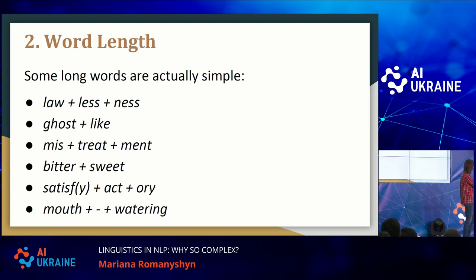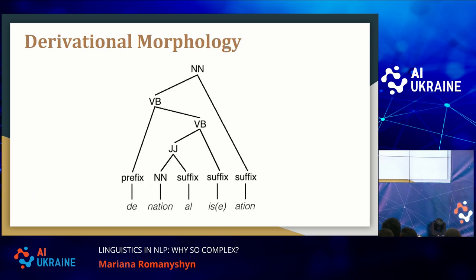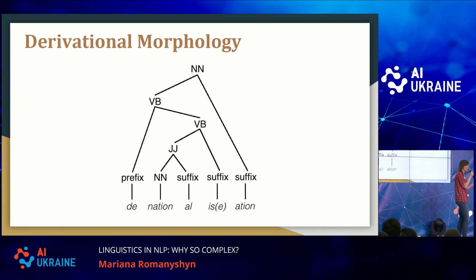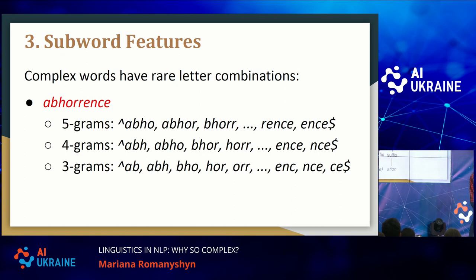This transparent process is called derivational morphology — it explains how words grow different morphemes on the left and right and form new words. If you know "mouth" and "watering," you would know "mouthwatering." If you know "treat," you would know "mistreatment." If you can develop a tool called a morphological analyzer that tells you which word your particular word came from, you would be in a better position — because now you can analyze the word "nation" rather than "denationalization," and calculate its frequency and word length from that base.